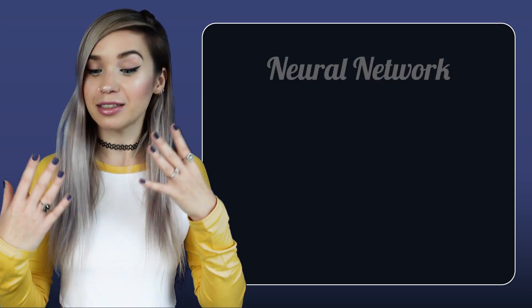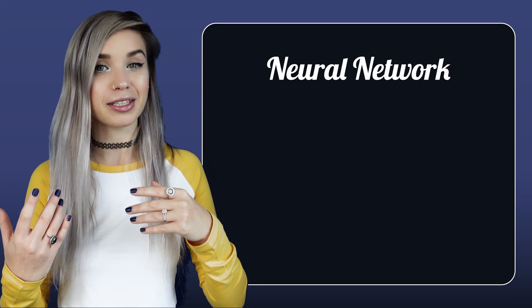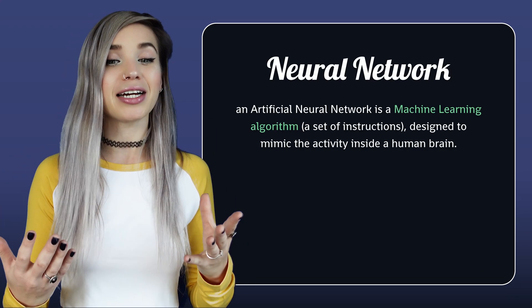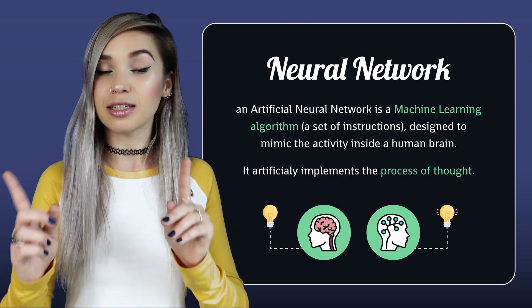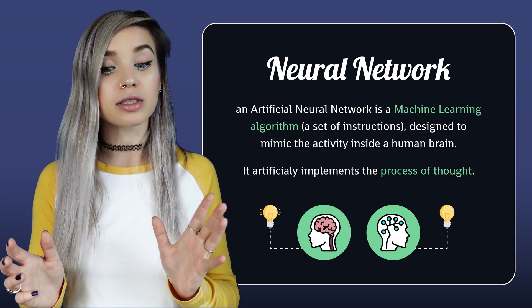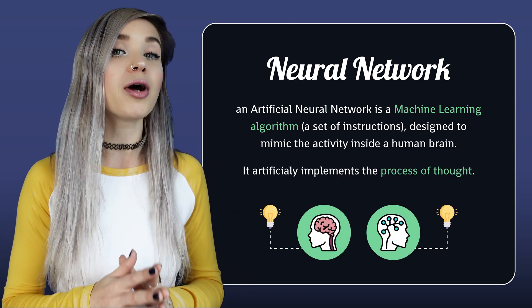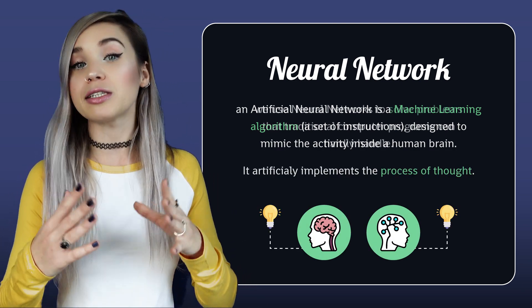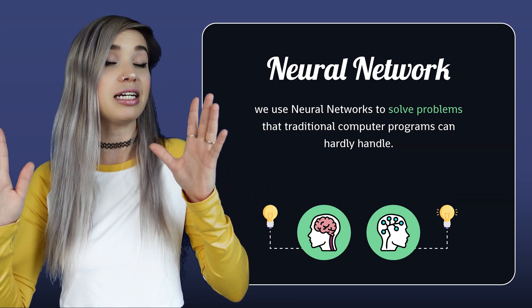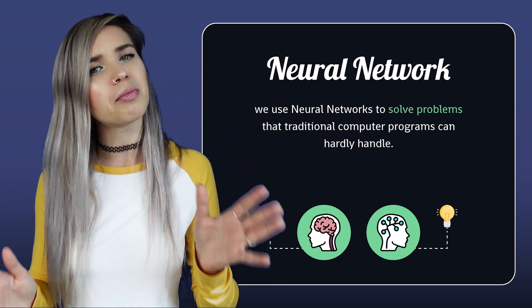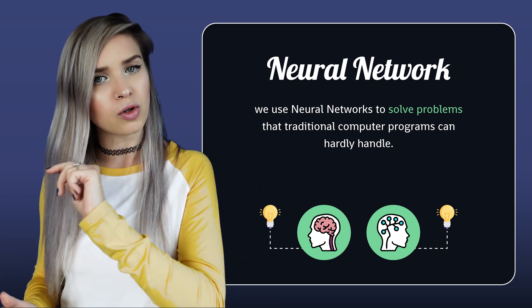Hi everyone! Today we will talk about my favorite machine learning algorithm, the neural network. Neural networks were designed to mimic the process of human thought. We use them to solve problems that traditional computer programs find extremely difficult or almost impossible to solve.